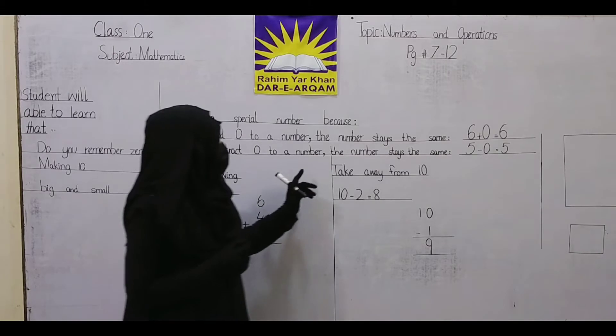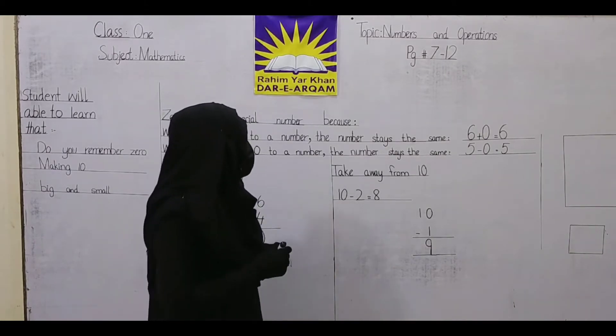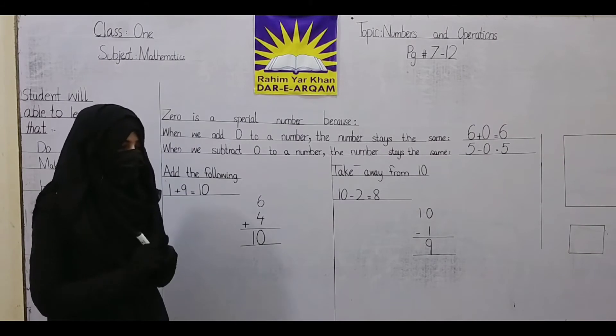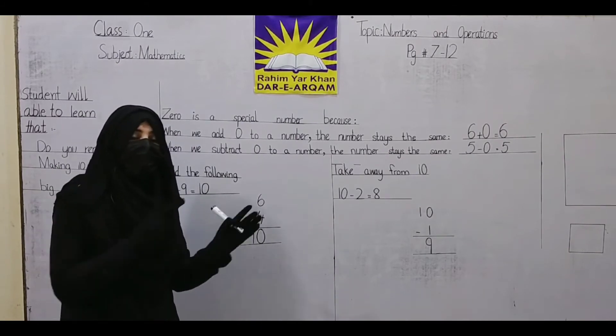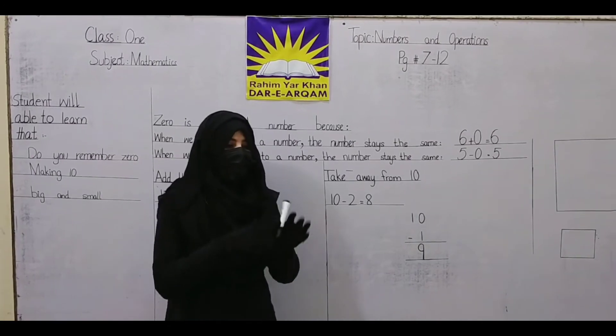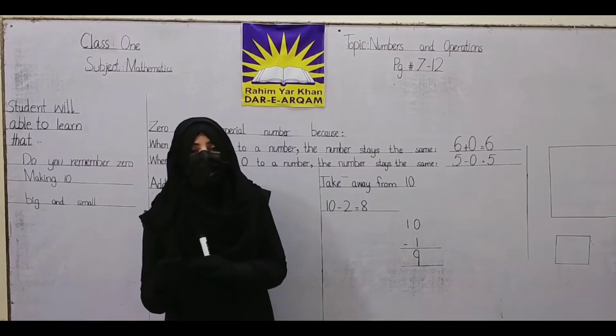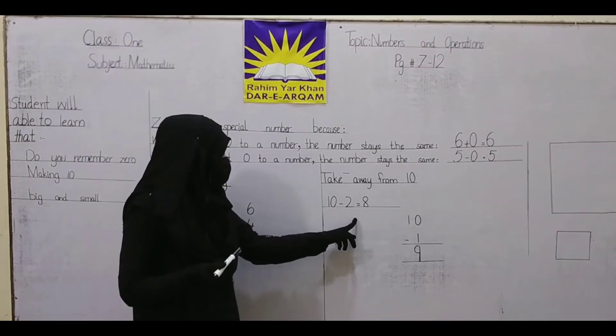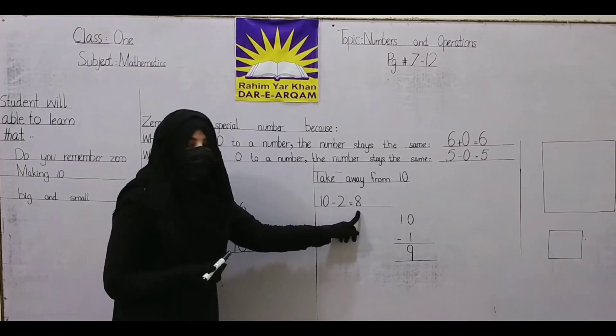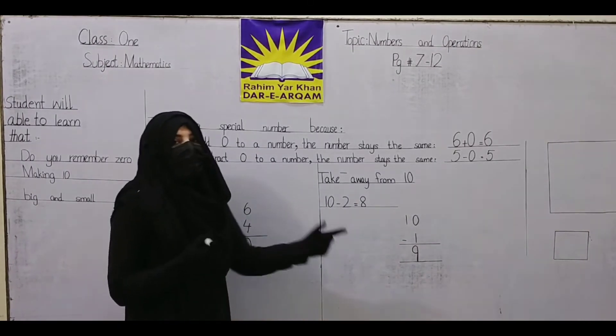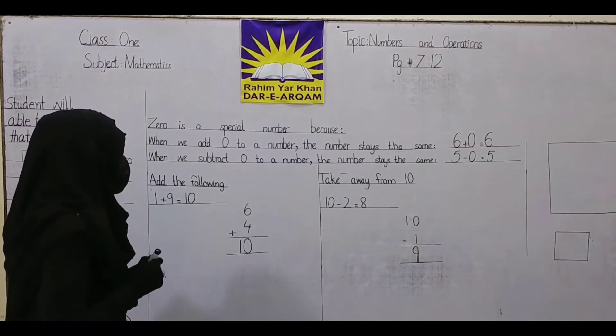Now we have another question: take away from 10. Take away means minus. We subtract different numbers from 10. For example, 10 minus 2 is 8, horizontal way. Vertical way: 10 minus 1 equals 9.